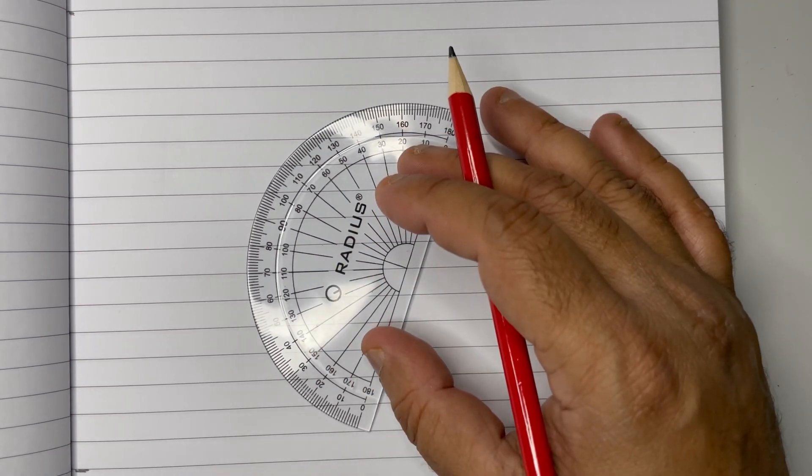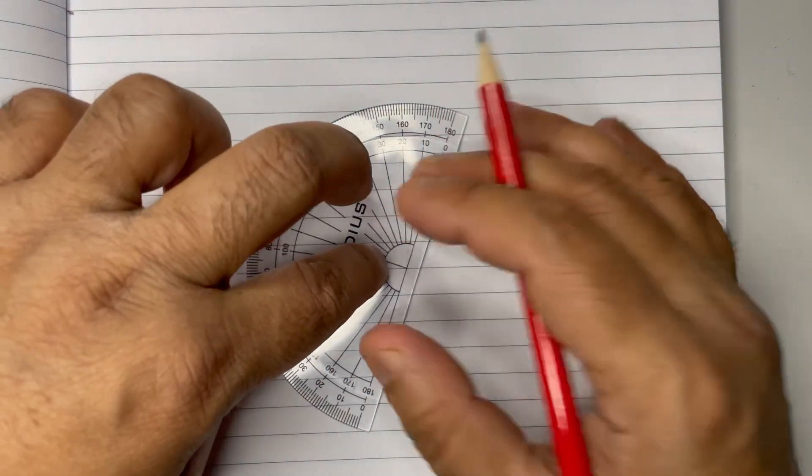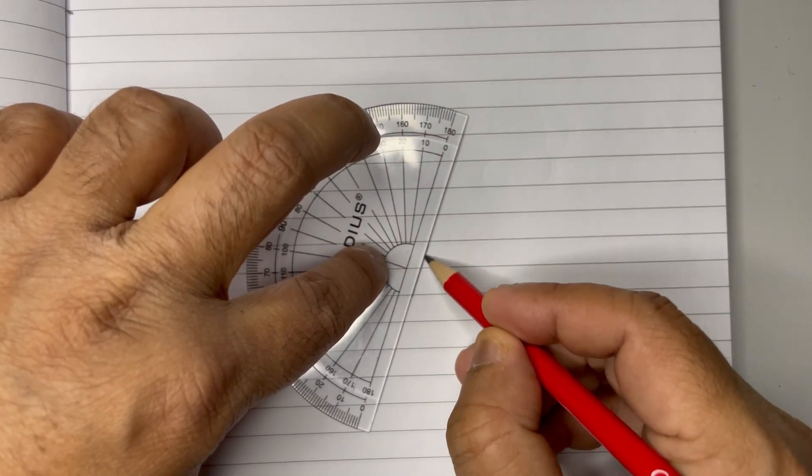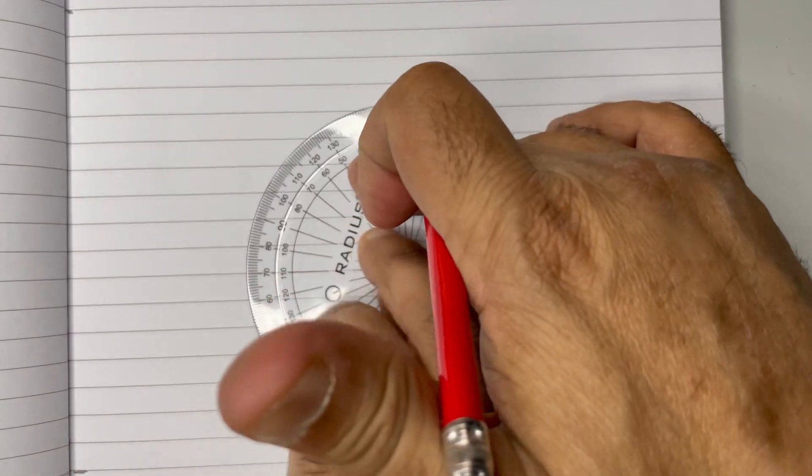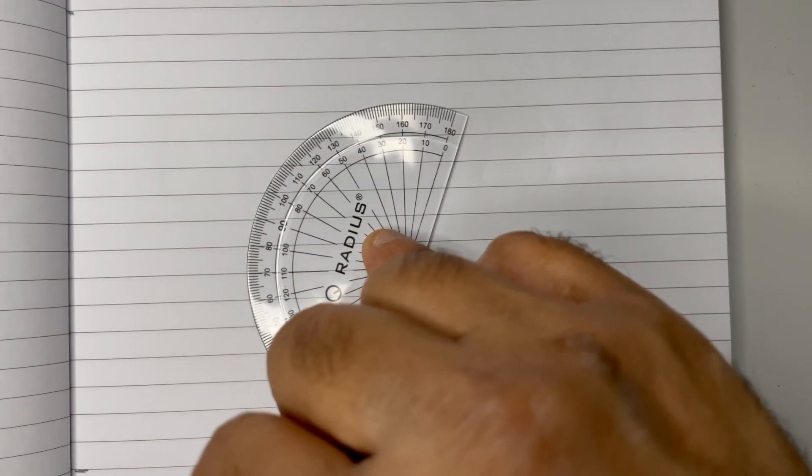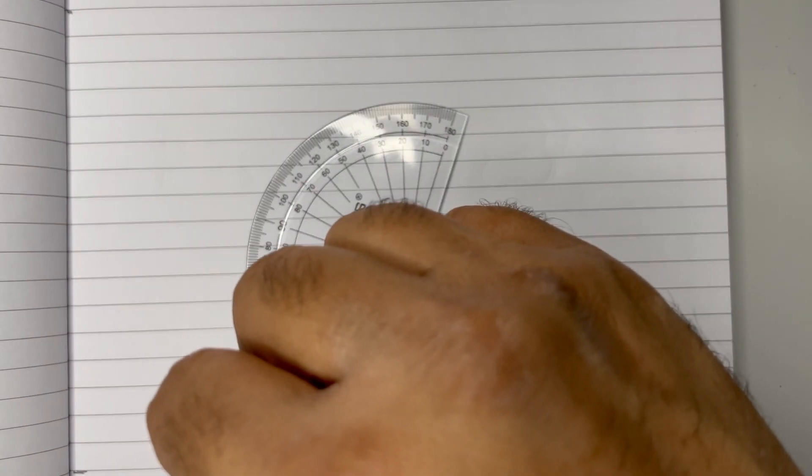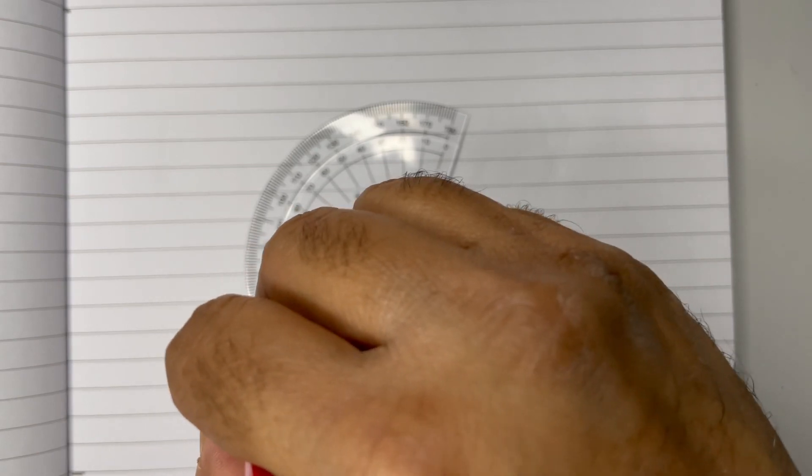By holding onto the protractor, draw a line here. From the zero, measure 130 degrees. Mark 130, then put a mark at 120, then put a mark at 110, and go till the other end at 130. Mark here.